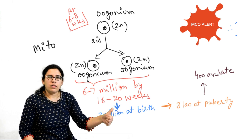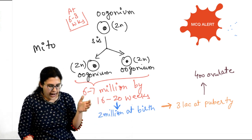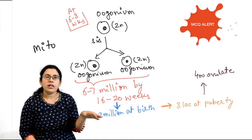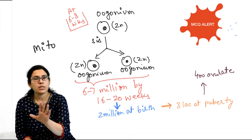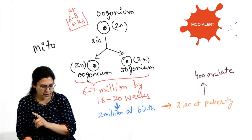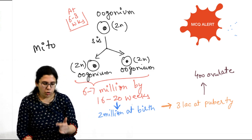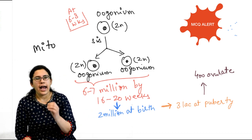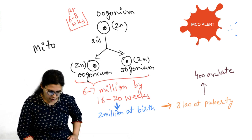To summarize these important MCQ points: at 6 to 8 weeks, oogonia start mitosis; by 16 to 20 weeks, there are 6 to 7 million — maximum oogonal content; at birth, 2 million; at puberty, 3 lakh; and out of these, only 400 ovulate.